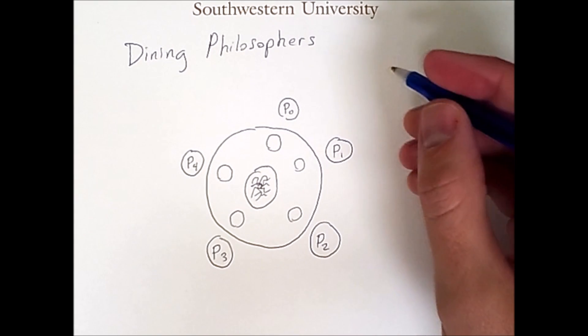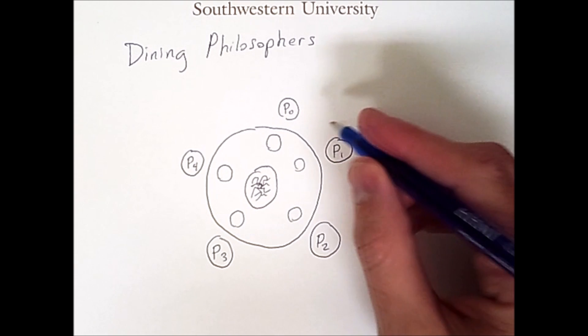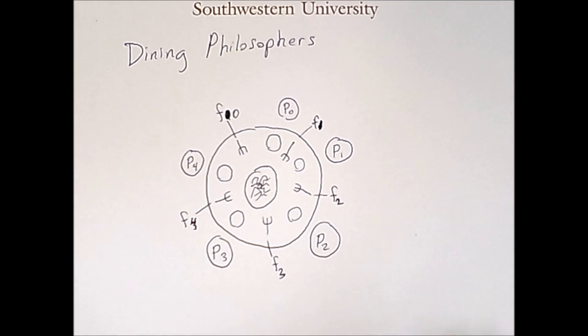Unfortunately, there are only five forks at this table. The conceit of this problem is that a philosopher requires two forks at the same time in order to eat spaghetti. Some have argued that this problem makes more sense if you give them chopsticks rather than forks, but the classic formulation uses forks, and that's what we'll use.